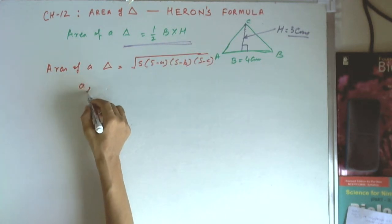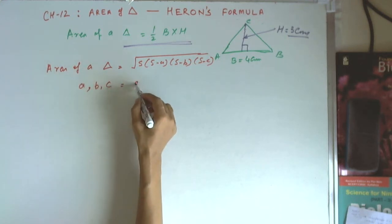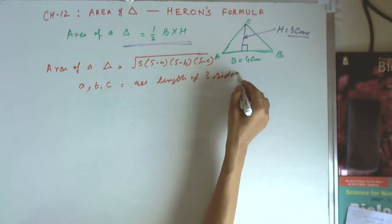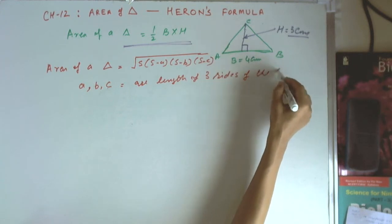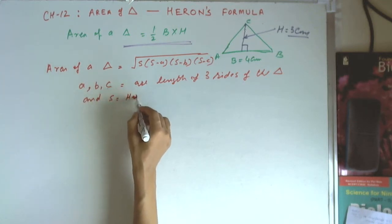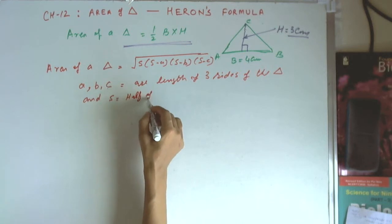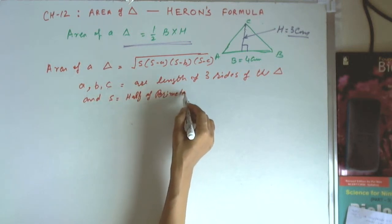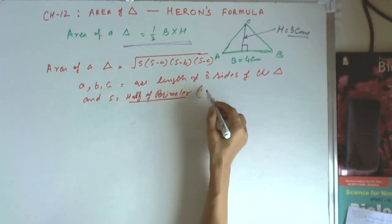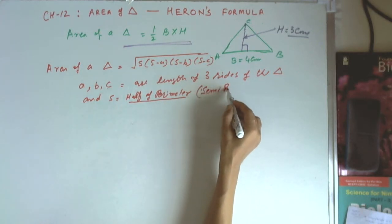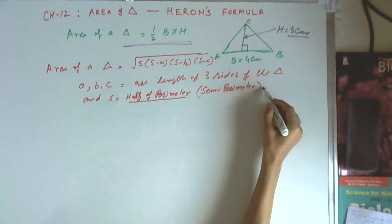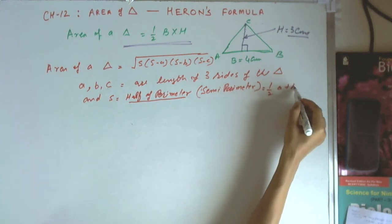Here, A, B, C are the lengths of the three sides of the triangle, and S is equal to half of the perimeter. Half of the perimeter can also be called the semi-perimeter, which is equal to half of (A + B + C).